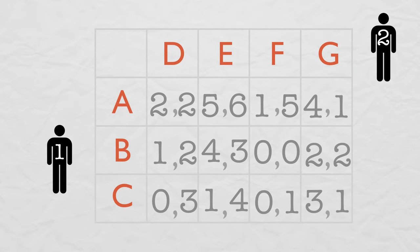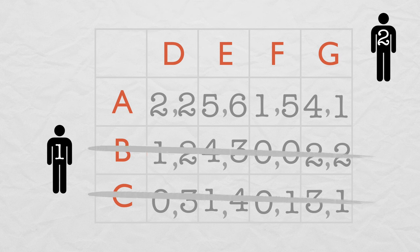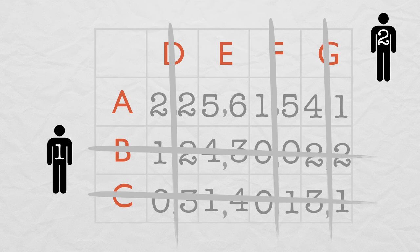The Prisoner's dilemma isn't the only game with a dominant strategy equilibrium. Here's a more complicated one. Can you tell which strategy is dominant? It's A for player 1, and it's E for player 2. So the dominant strategy equilibrium is AE.